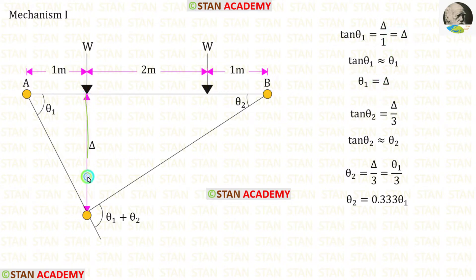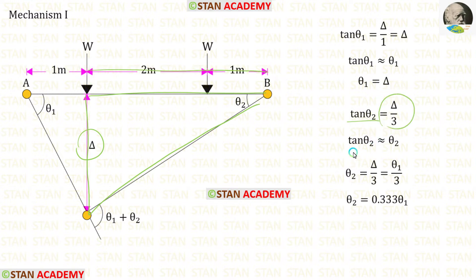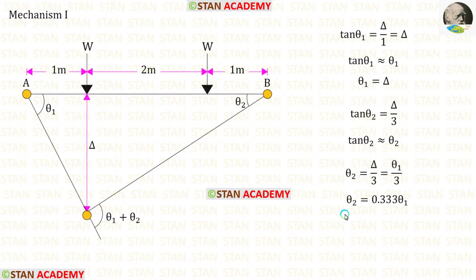Now let us take the right side triangle. In this triangle, tan theta2 equals delta upon 3. We know that tan theta2 is approximately equal to theta2. So for theta2 we take delta upon 3. Since delta equals theta1, we are getting theta2 equal to 0.333 theta1.